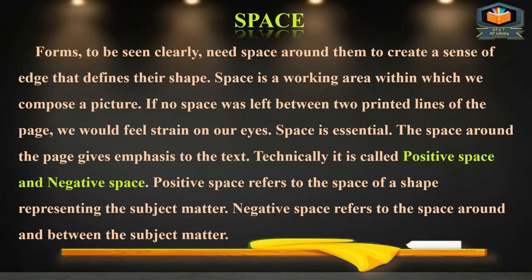The next element is Space. Forms need space around them to create a sense of edge that defines their shape. Space is a working area within which we compose a picture. If no space was left between two printed lines on a page, we would feel strain on our eyes. Space is essential. Technically, there are two types: positive space and negative space. Positive space refers to the space of a shape representing the subject matter; negative space refers to the space around and between the subject matter.